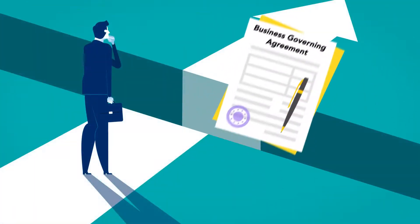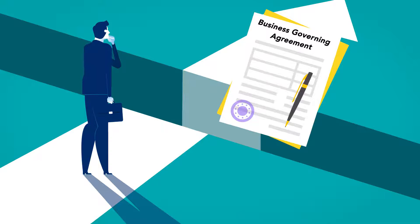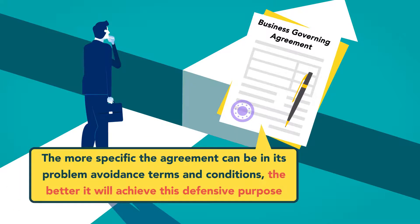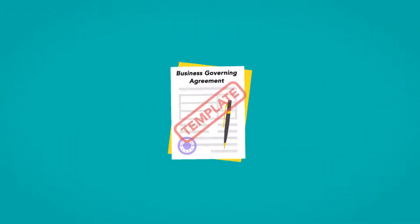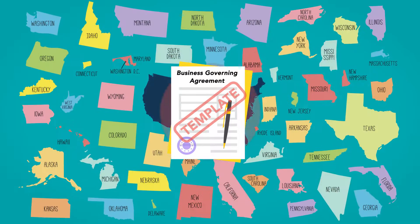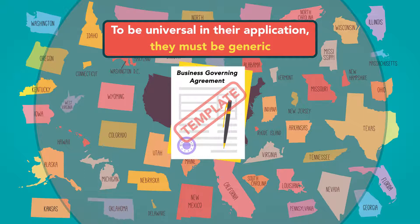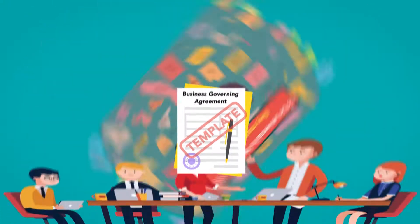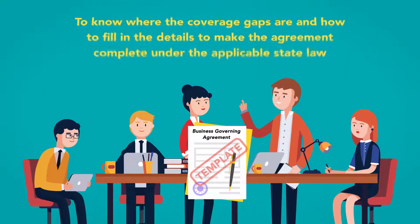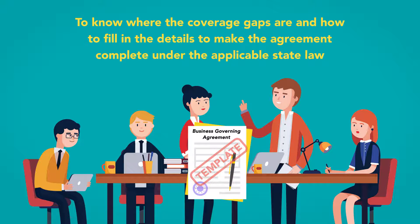An important goal of a governing agreement is to anticipate and avoid problems. The more specific the agreement can be in its problem avoidance terms and conditions, the better it will achieve this defensive purpose. Governing agreement templates that attempt to satisfy the requirements of every state's laws can have difficulty because to be universal in their application they must be generic. It's up to the people using the template to know where the coverage gaps are and how to fill in the details to make the agreement complete under the applicable state law.